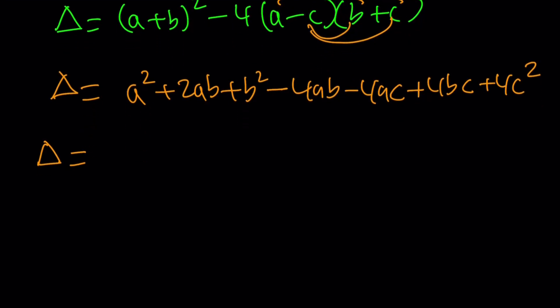And now let's see if we have any like terms. Okay, so these two are like terms. We can go ahead and combine them. So a squared minus 2ab and then plus b squared, and then minus 4ac, plus 4bc, plus 4c squared.